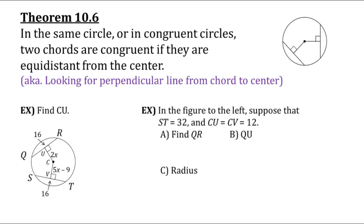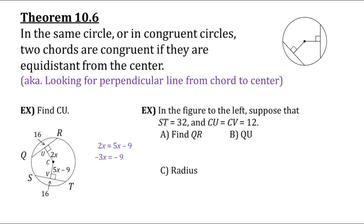Let's look at the first example — find CU. Notice the two perpendicular lines going from the center to the chords. Both chords are marked with a length of 16, so they are congruent and perpendicular, meaning they're equidistant. So the two green portions are equal: 2x equals 5x minus 9. Subtracting 5x gives negative 3x equals negative 9, so x equals 3. They asked for CU, so plug into 2x: 2 times 3 gives CU equals 6.